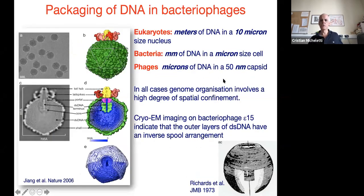A good way to introduce the problem is to consider the packing of genomic DNA across the spectrum of living cells. In eukaryotes, you typically have meters of DNA packed in a nucleus of about 10 microns. In bacteria, you have millimeters of DNA in a micron-sized cell.